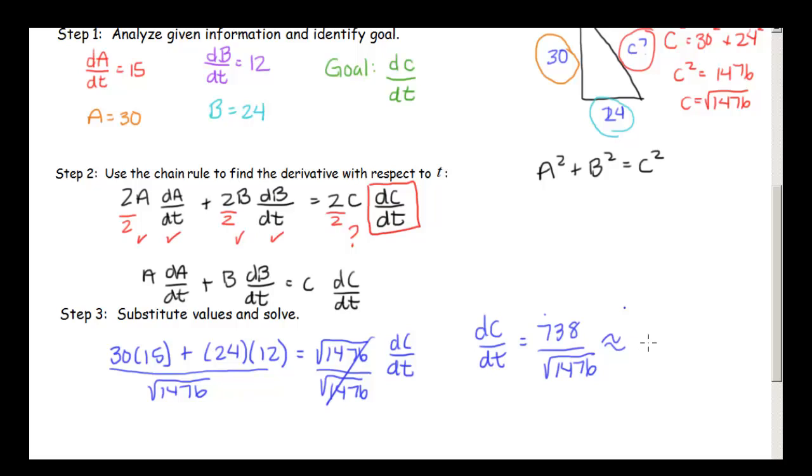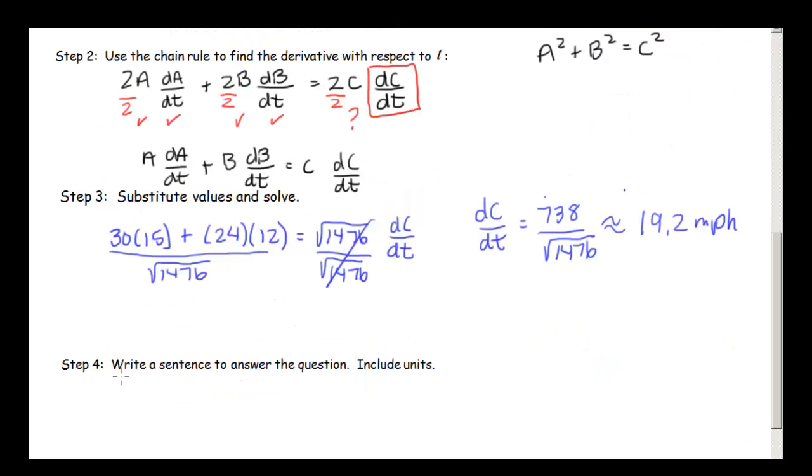The last thing we need to do is answer our question in a sentence. And we have the distance between the boats is increasing at the rate of 19.2 miles per hour. So that's it for the related rates examples. See you next time.